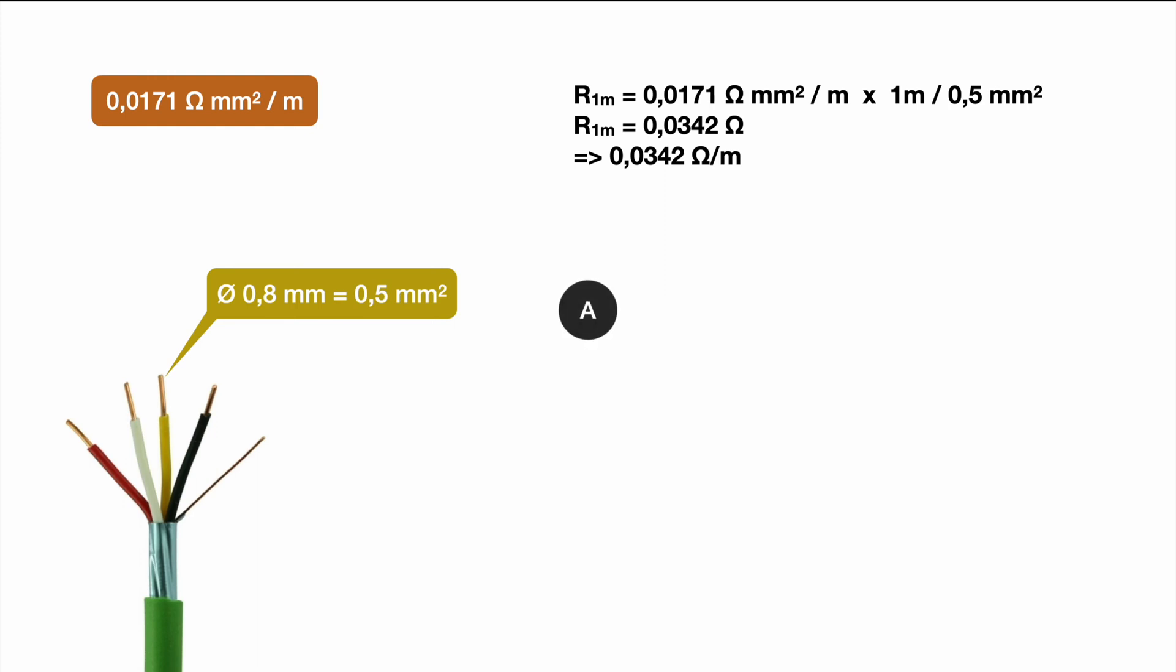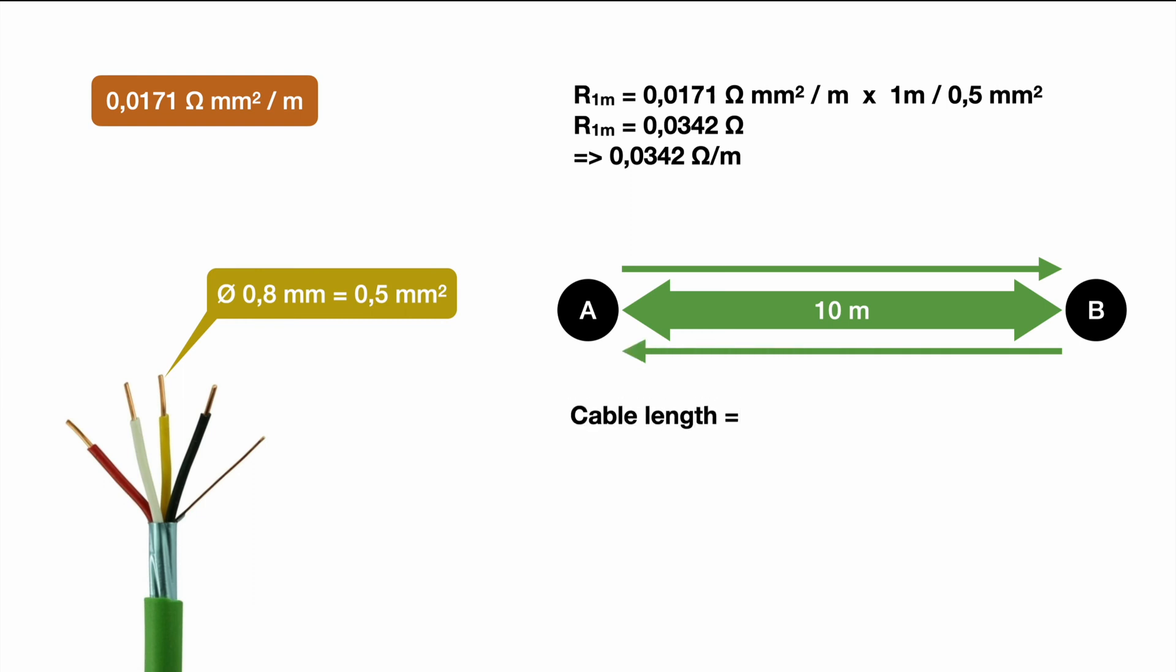So let's assume we want to go from point A to point B. The distance in between those two points is about 10 meters. Since circuits need always a closed loop we have to go from point A to point B and also from point B to point A. This means our cable length is in total 2 times 10 meters so equals 20 meters.